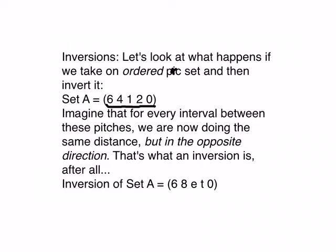Now in order to invert this, imagine that for every interval between them, we're now doing the same distance but in the opposite direction. That's what an inversion is after all. So from 6 to 4, we're going down 2. So now when we invert it from 6, we go up 2. That's how 6 goes to 8.